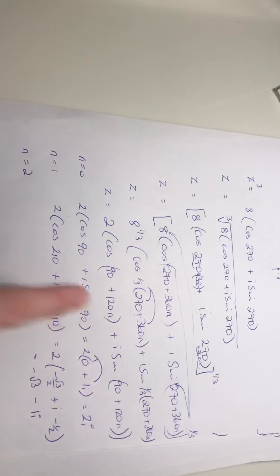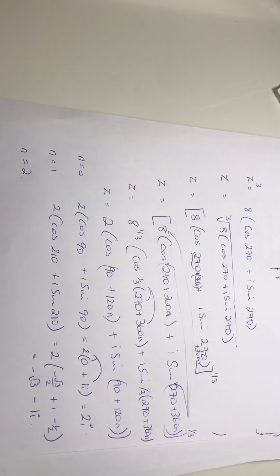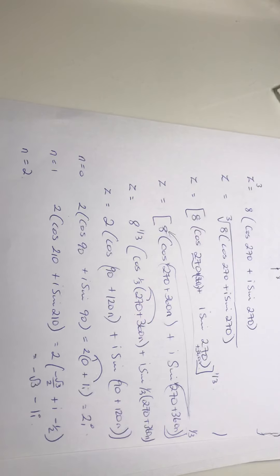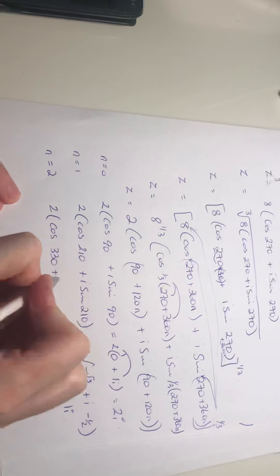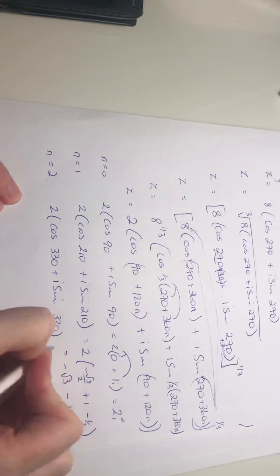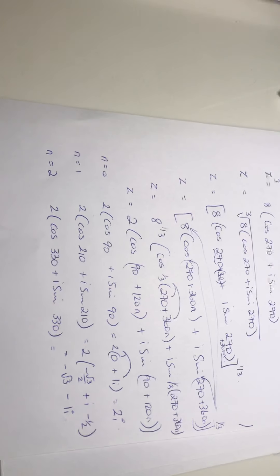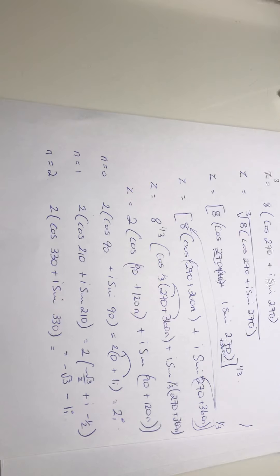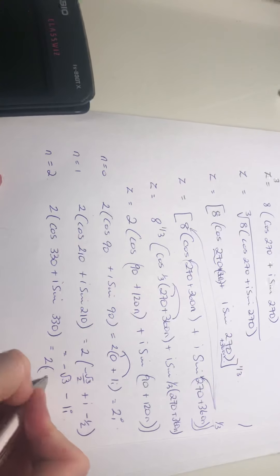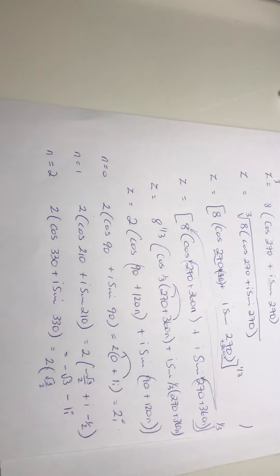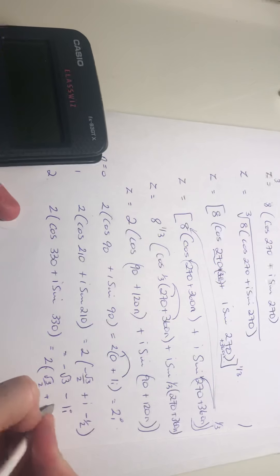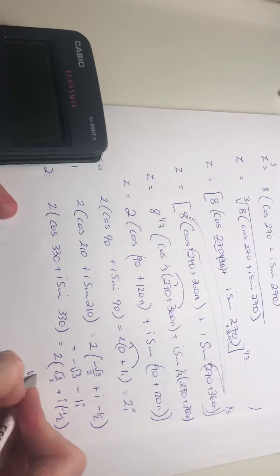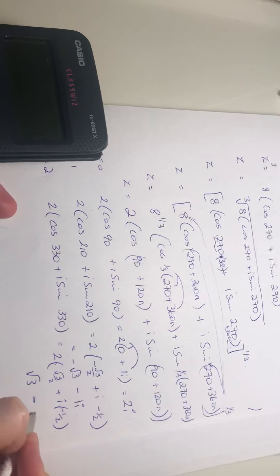And then let's go for if n was 2. So that'd be 90 plus 240. So it would be 2 times the cos of 330 plus i sine 330. And that is equal to, cos of 330 is root 3 over 2. So that's 2 times root 3 over 2. And then the sine of 330 is minus a half. And again, multiply your 2 in, we end up at root 3 minus 1i.